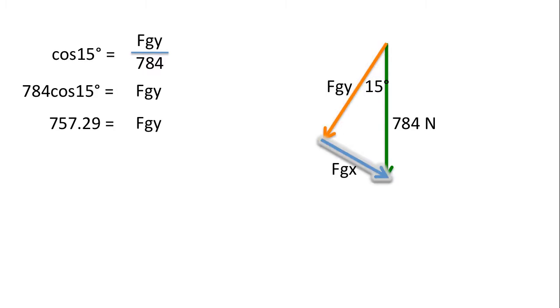Now, focusing on the x component of gravity. Using the trigonometric ratio, sine 15 degrees equals fgx over 784. Recall that sine is opposite side over hypotenuse. For this angle here, the opposite side is fgx. And the hypotenuse is 784.